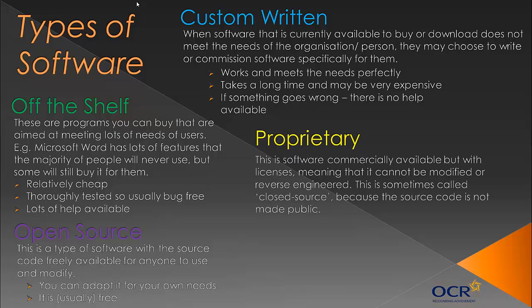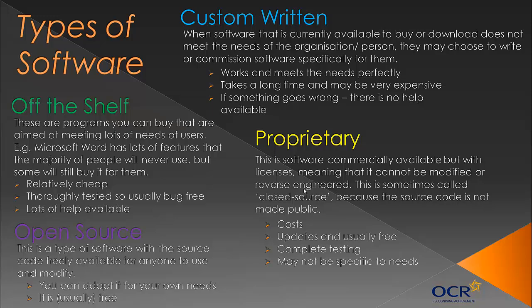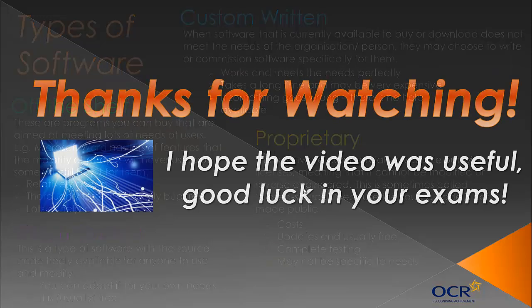Finally, proprietary software is software that's commercially available but with licenses — often called closed source. Unlike open source, you usually have to pay for it, and the source code isn't available. It's often copyrighted or even patented, meaning you can't modify it or reverse engineer it. Reverse engineering is when you take the final product and work backwards. A downside is it costs money, but updates are usually free and applied automatically. It's also very well tested with few bugs. One further downside is it may not be specific to your needs since it's commercially designed for a general audience.